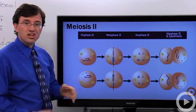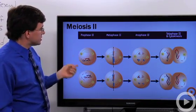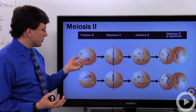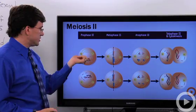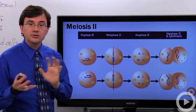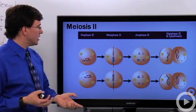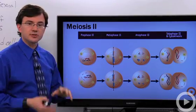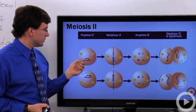So meiosis II looks a lot like mitosis. And so we'll have prophase II, nuclear envelope breaks down again, we tighten up any of the chromosomes that have been loosened up into the chromatin form during meiotic interphase, and our spindle fibers start to form and attach themselves to our chromosomes.